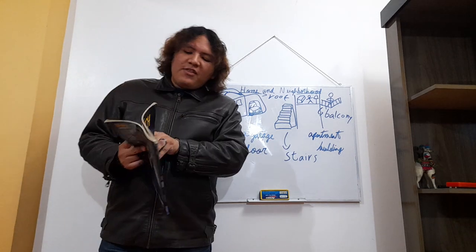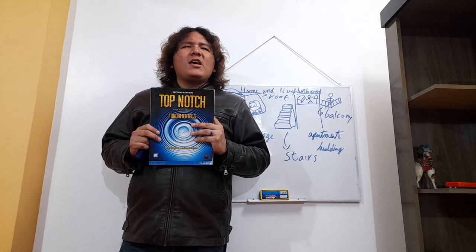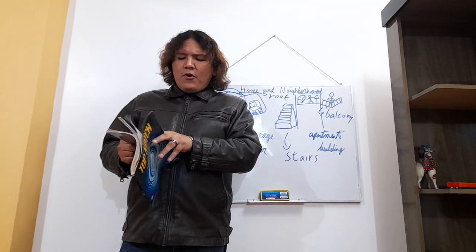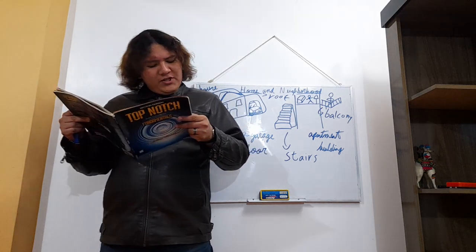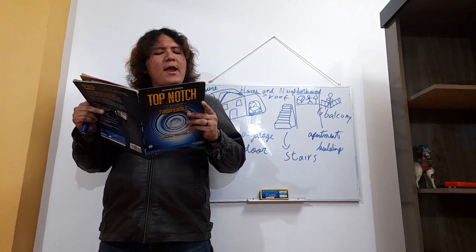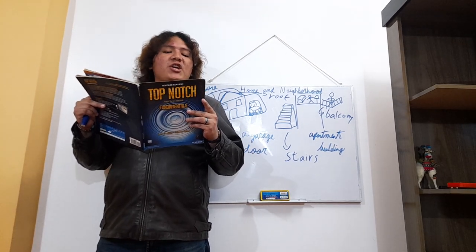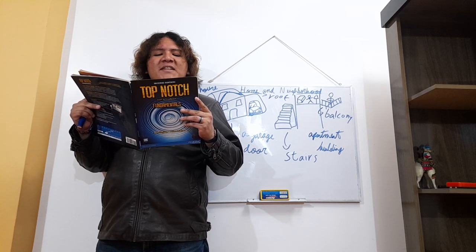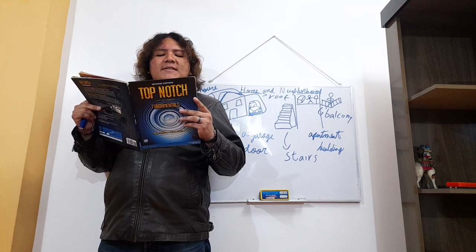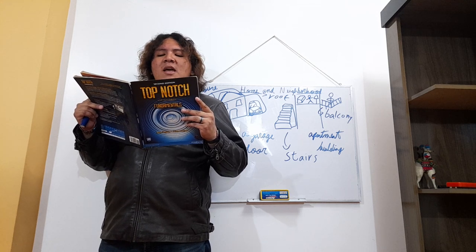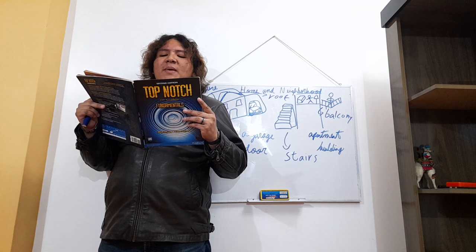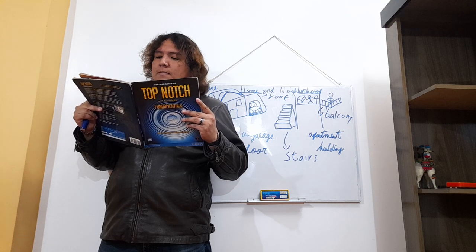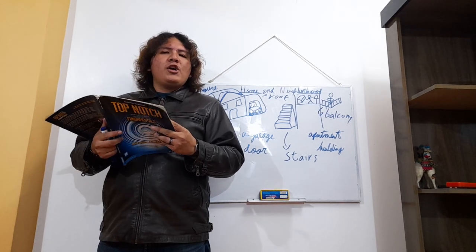We are using this Top-Notch book — I used it back in 2015 in my first English course at Idiomas. Unit 8 is called 'Home and Neighborhood.' The communication goals are: describe your neighborhood, ask about someone's home, and talk about furniture and appliances. The grammar topics include simple present tense questions with 'where,' prepositions of place, 'there is/there are,' contractions, and questions with 'how many.'